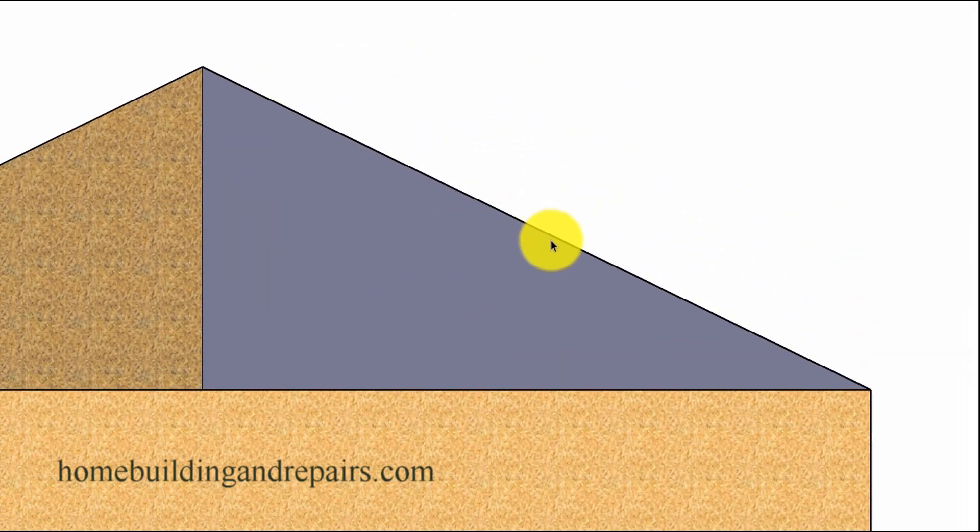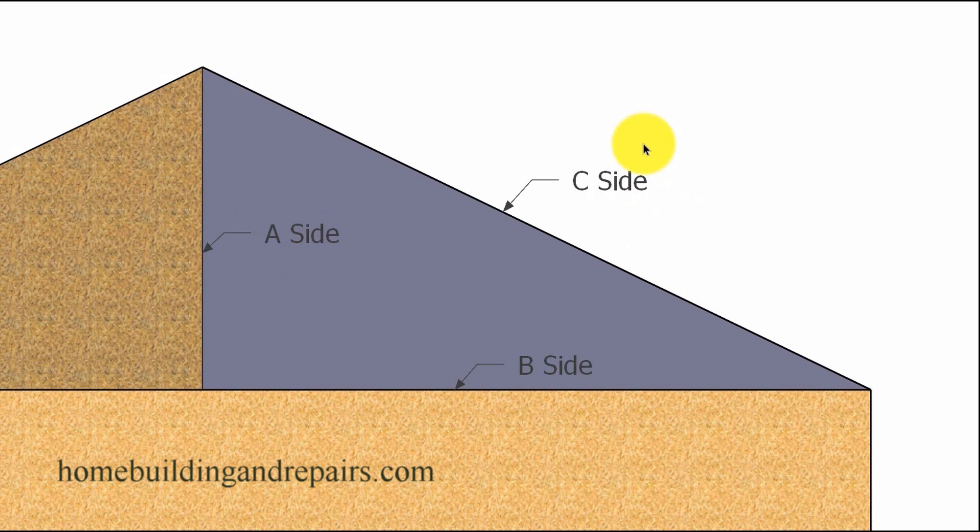So let's go ahead and take a look at what we're actually going to need in the math formula. We are not going to know what the C side is, but we are going to need to know what the A and the B sides are. And a lot of times when you're figuring out a roof rafter, you're going to have a 5 and 12 pitch, for example, and I believe that's about 22 and a half degrees.